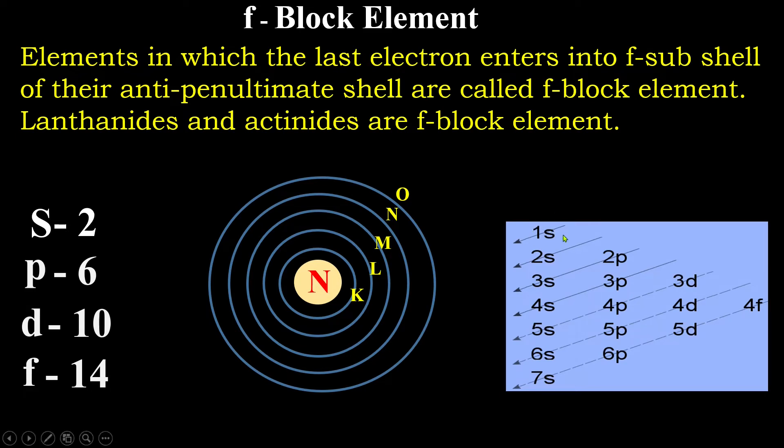First, we have to fill a first shell, S sub-shell. The number of electron will be two. And then we have to go to second shell, S sub-shell. And then we have to go to second shell, P sub-shell. And then third shell, S sub-shell. And then third shell, P sub-shell. And fourth shell, S sub-shell. This is the order of filling up of electron in different shells. And this is given by Aufbau principle.